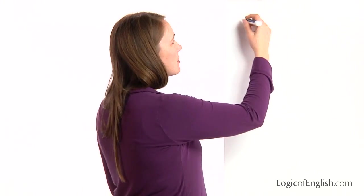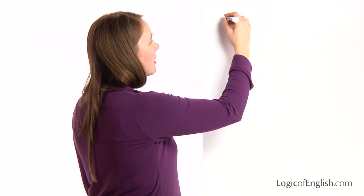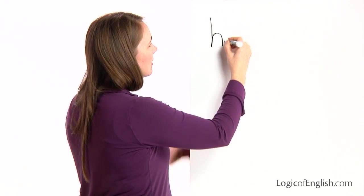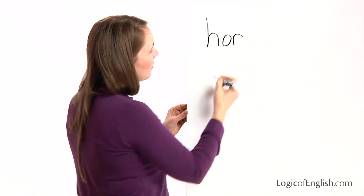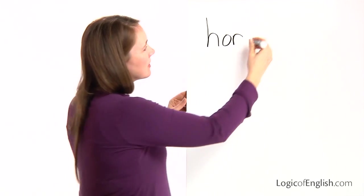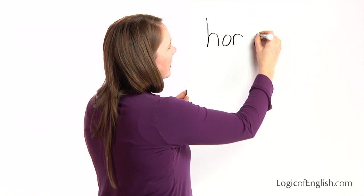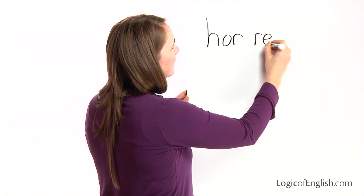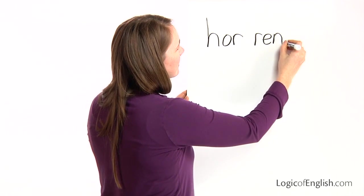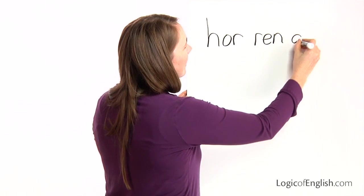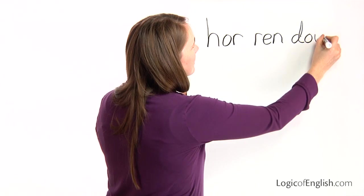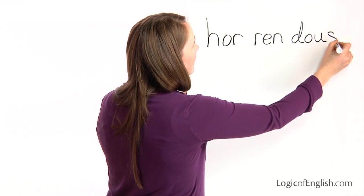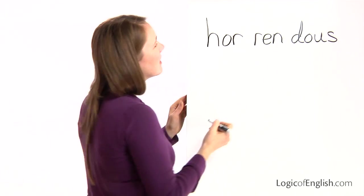So the first syllable is 'hor': H, O. The second syllable is 'ren': R, E, N. And the third syllable is 'dus': D, uh, S.